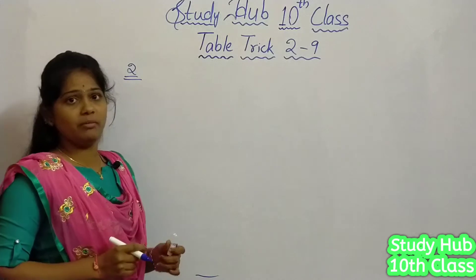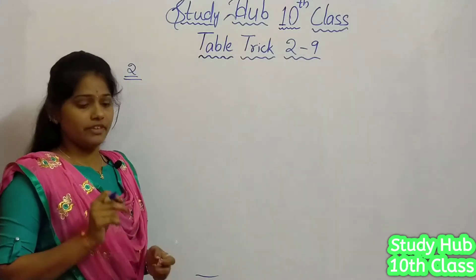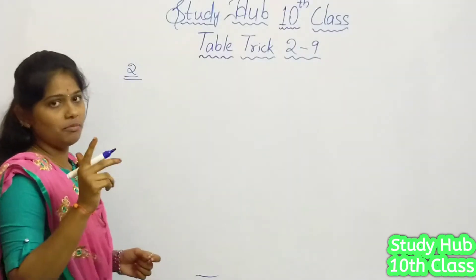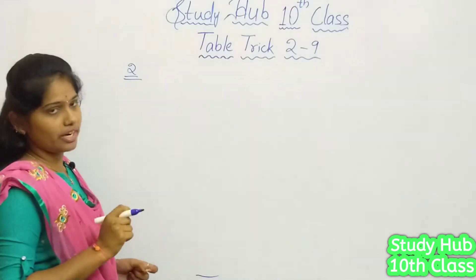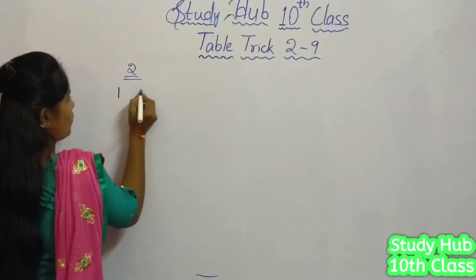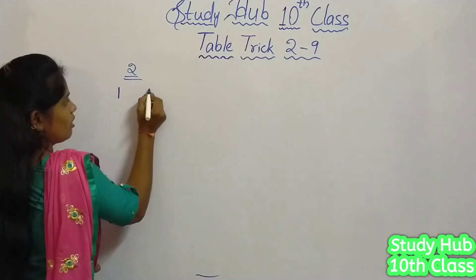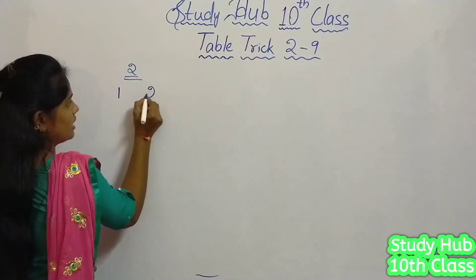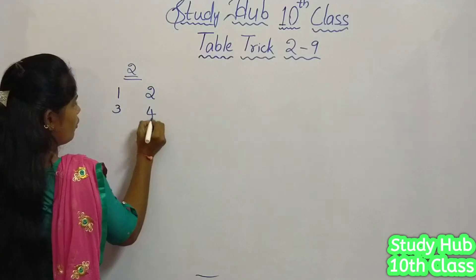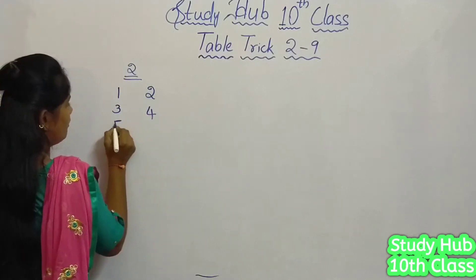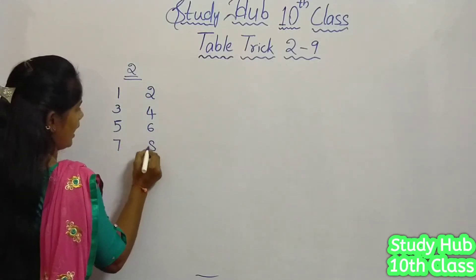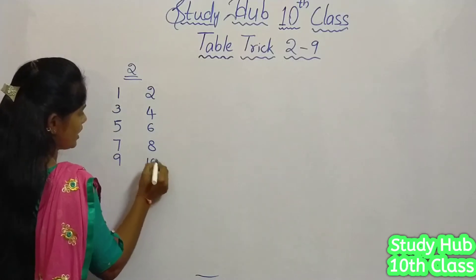Friends, for writing the 2 times table, firstly we have to consider 2 columns — 2 vertical lines. We have to write starting from number 1. So we write 1 through 10 in the first column and 11 through 20 in the second column.